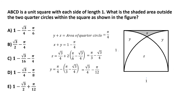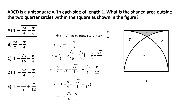Since we've found y, we substitute into x plus y equals 1 minus π/4 and solve for x. x equals 1 minus π/4 minus y, where y equals root 3 by 4 minus π/12. Simplifying, x equals 1 minus root 3 by 4 minus π/6. That's the shaded area we needed to find. The correct answer is option A: one minus root 3 by 4 minus π by 6.